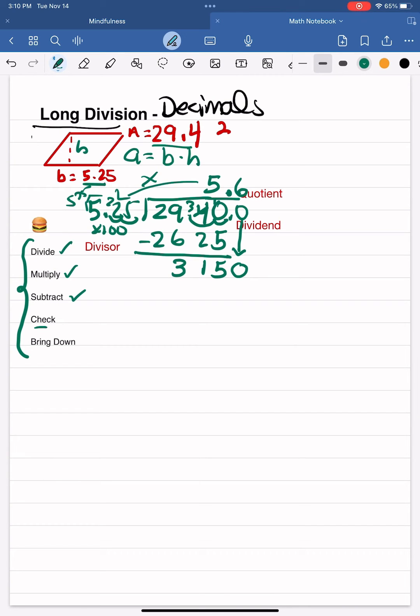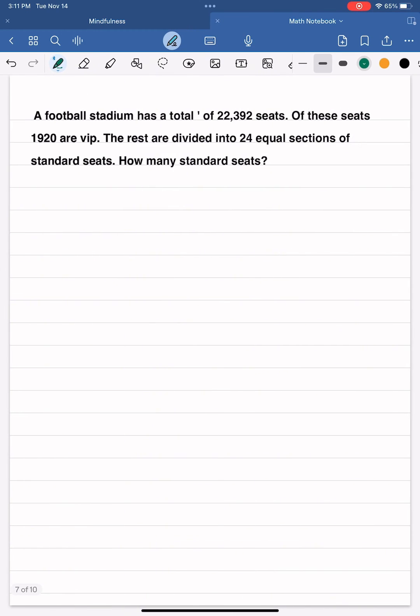So I'm going to bring down the zero here, and I can fit about six groups—just one more group of 525 into 3,150. And when I multiply, 6 times 525 gives me 3,150. So my answer, the quotient, is 5.6.